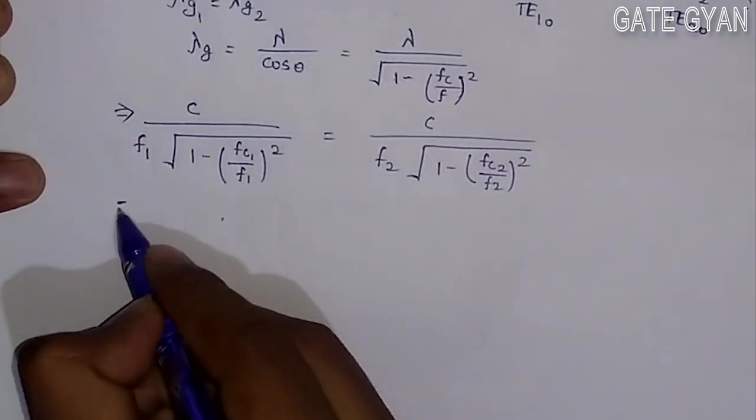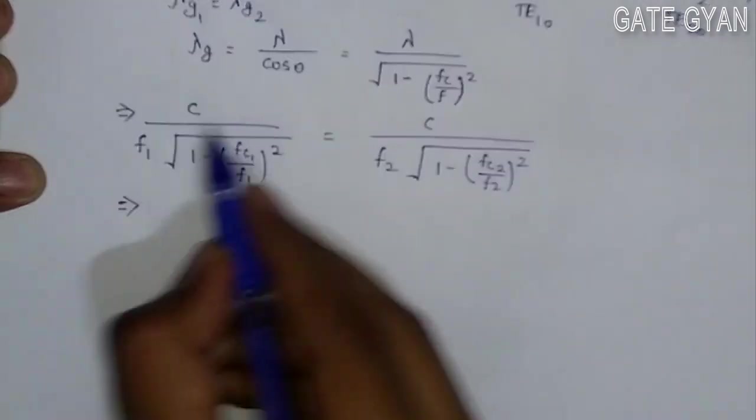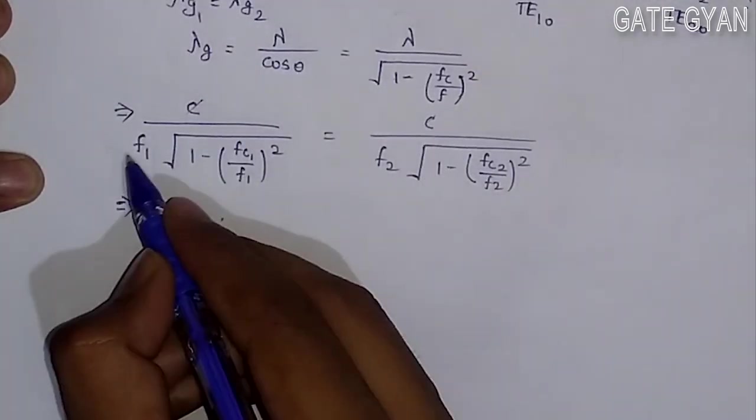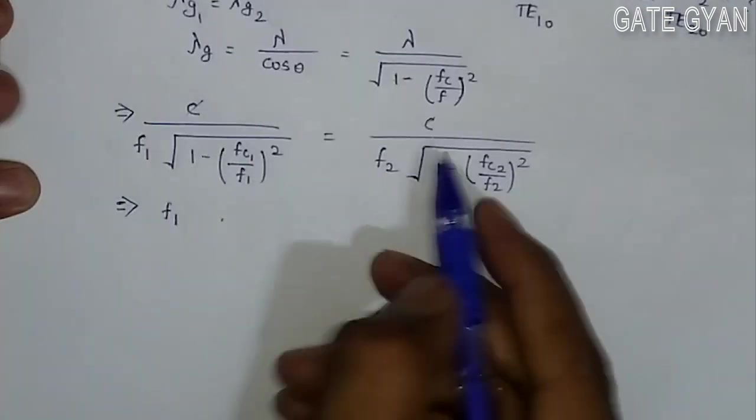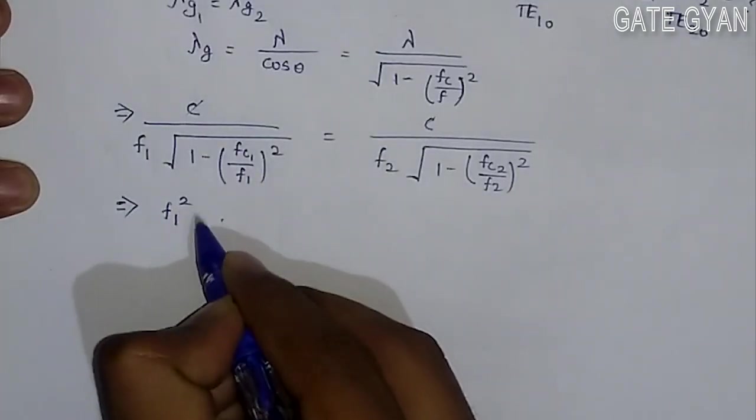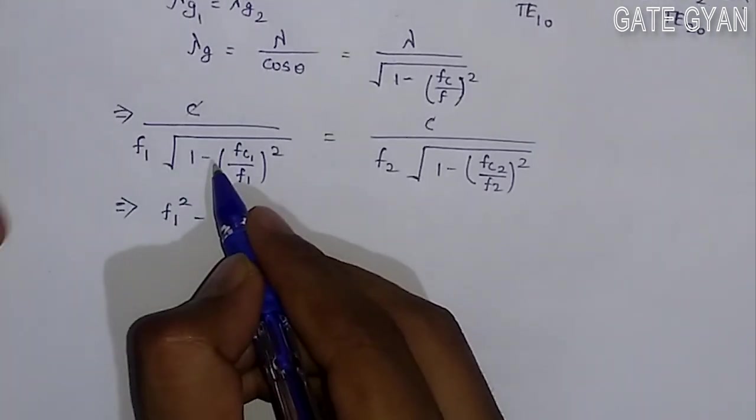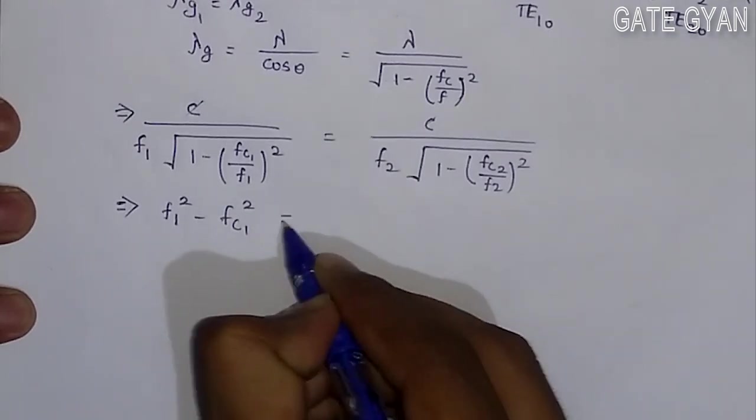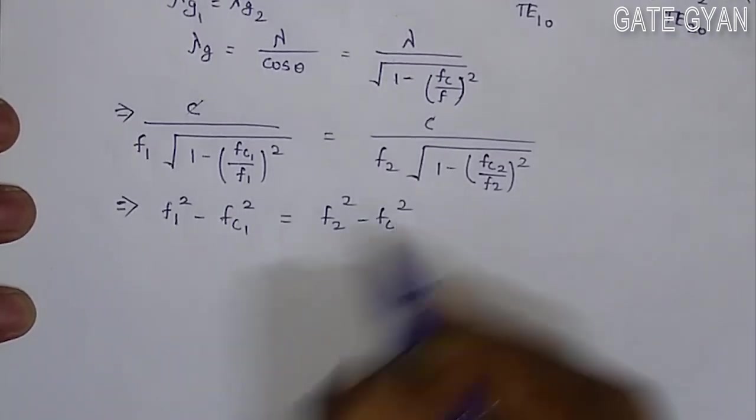C to C will get cancelled out. If you solve it further, this and this cancel, so I can write it as F1. Squaring on both sides, F1 square minus FC1 square equals F2 square minus FC2 square.